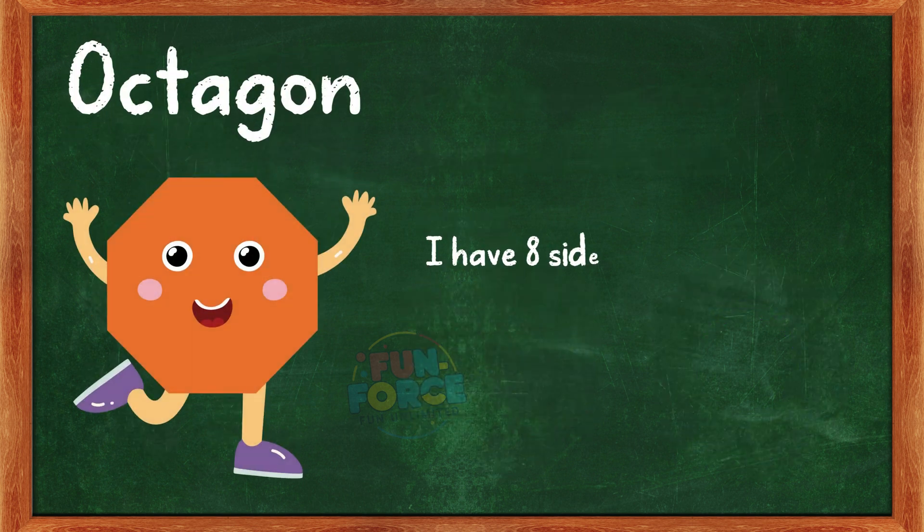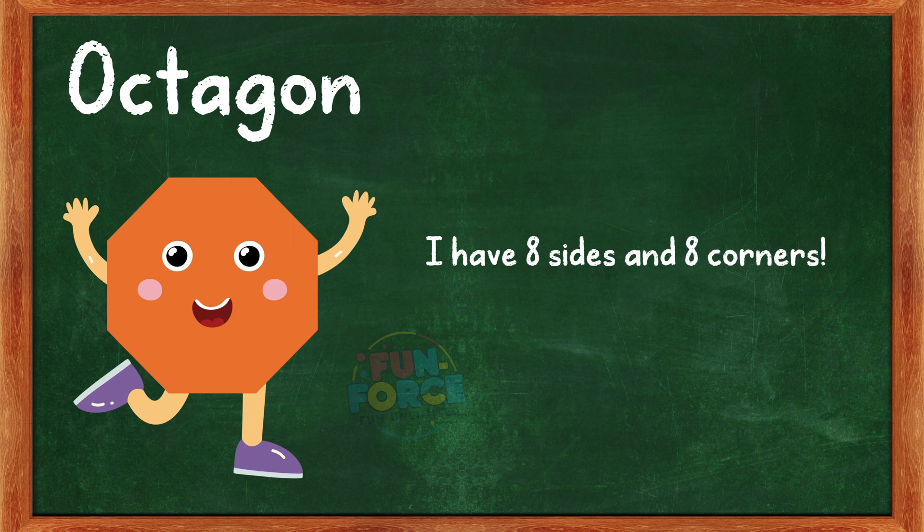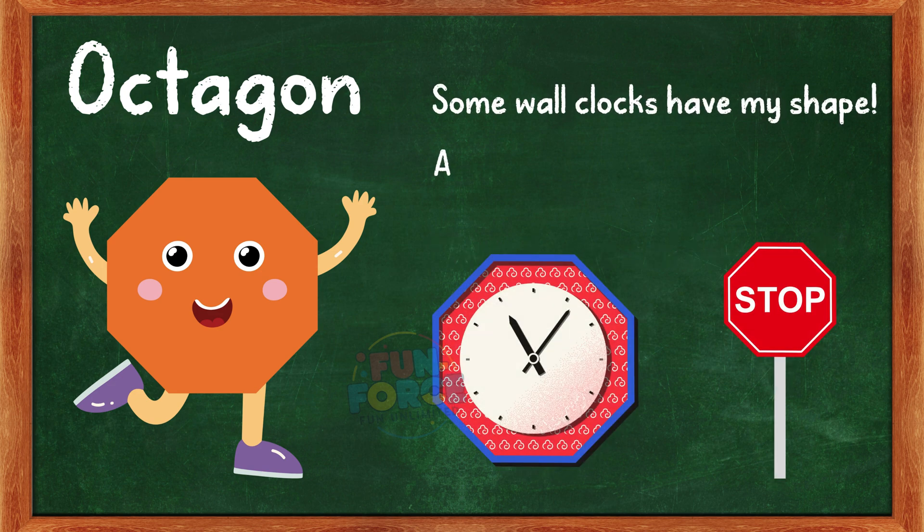I am an octagon. I have eight sides and eight corners. Can you guess some objects that are octagon shaped? Some wall clocks have my shape. A stop sign looks just like me.